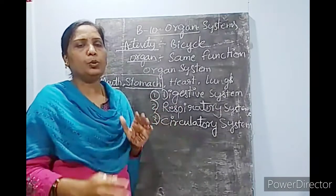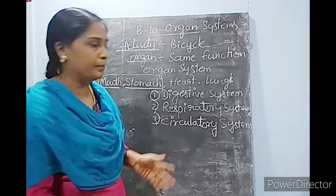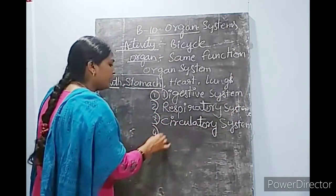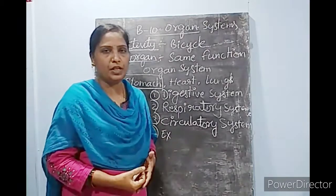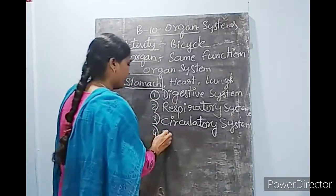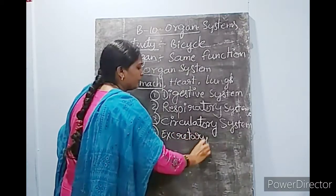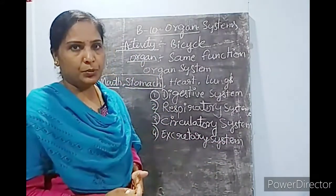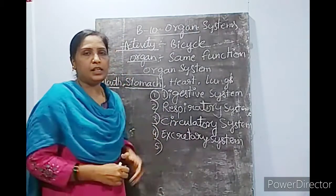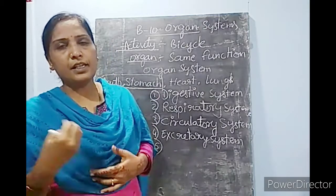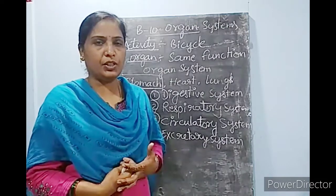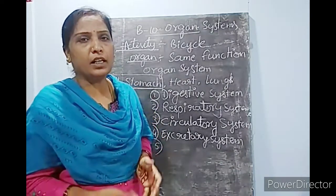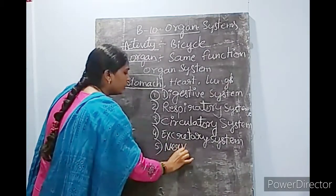The blood vessels and heart together make the circulatory system. After digesting food, some waste materials are produced inside the body. To send out those waste products from the body, there is another system called the excretory system. In the excretory system, your kidneys help to send out the waste products. And for anything — reading, doing exercise, eating, or moving — you need instructions. One master organ is there in your body: that's your brain. Your brain is one of the organs in the nervous system.